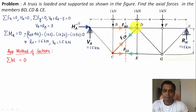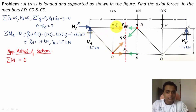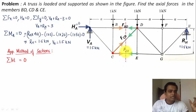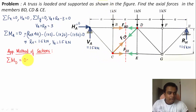Examining point D: forces to the left of the section are considered. F_BD and F_CD both pass through point D, so their moments are zero, leaving only F_CE as the unknown. Taking moment about D gives a moment equation with only F_CE as the unknown. I'm inclined toward point D because it involves fewer forces.